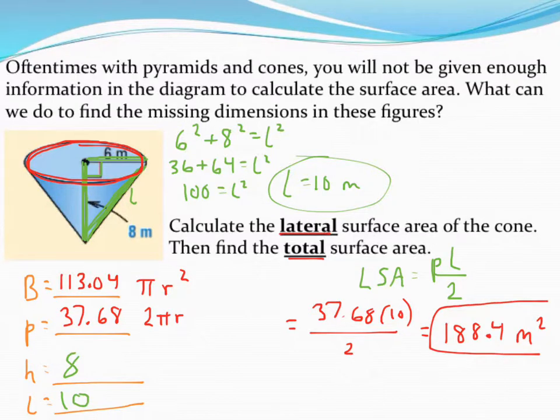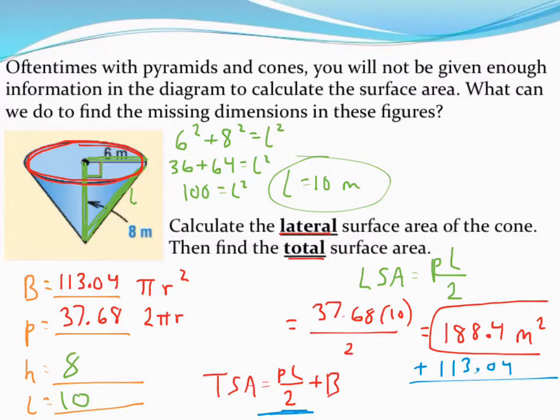To find the total, you may recall the formula was P times L divided by 2, which is just your lateral surface area, and then add on the base, the base we did not include that first time. So I could recalculate the entire formula, or since I already know what P times L divided by 2 is, let's just go ahead and add on the base area to what I already have for the lateral. That'll get me all the sides in this figure covered. So adding that together gets me a total surface area of 301.44 meters squared.